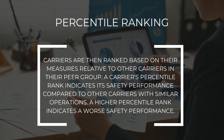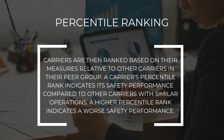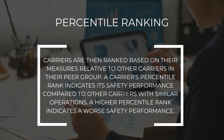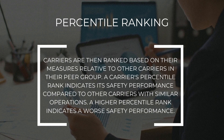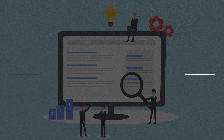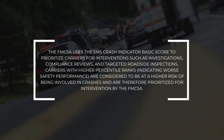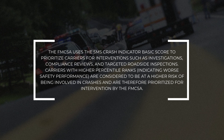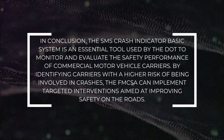Step three is percentile ranking: carriers are then ranked based on their measures relative to other carriers in their peer group. A carrier's percentile rank indicates its safety performance compared to other carriers with similar operations — a higher percentile rank indicates worse safety performance. The FMCSA uses the SMS Crash Indicator BASIC score to prioritize carriers for interventions such as investigations, compliance reviews, and targeted roadside inspections. Carriers with higher percentile ranks are considered to be at a higher risk of being involved in crashes and are therefore prioritized for intervention.